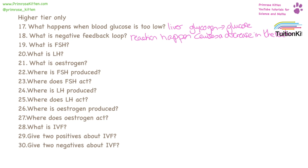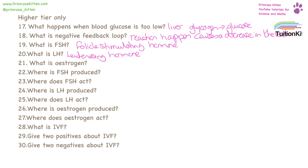FSH is follicle stimulating hormone. LH is luteinizing hormone. Oestrogen is the hormone predominantly found in women, responsible for the control of the menstrual cycle.